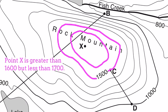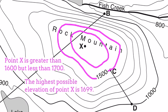So if I were asked what the possible elevation of x is, any answer between 1600 and 1700 would be fine. But what if I were asked what's the highest possible elevation of point x? Well, that in mind, greater than 1600, but less than 1700 means that the highest possible elevation of x would be 1699.